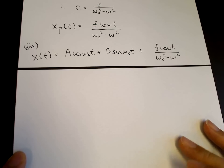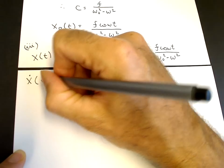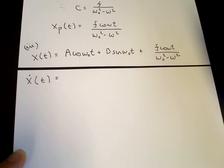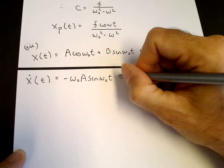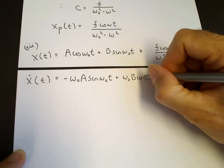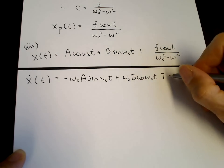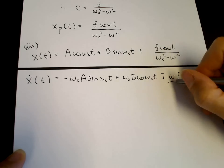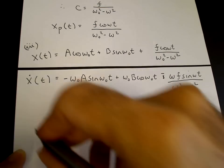First we find the derivative. We need to satisfy both x of 0 and x-dot of 0. Taking x-dot of t using the chain rule and derivatives of the trig functions, we get minus omega-naught a sine omega-naught t plus omega-naught b cosine omega-naught t minus omega f sine omega t over omega-naught squared minus omega squared.